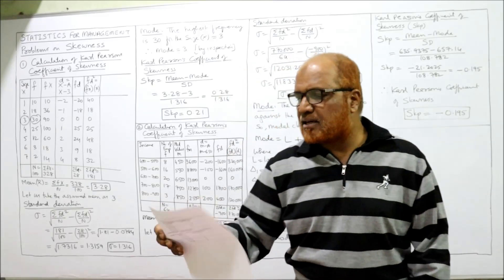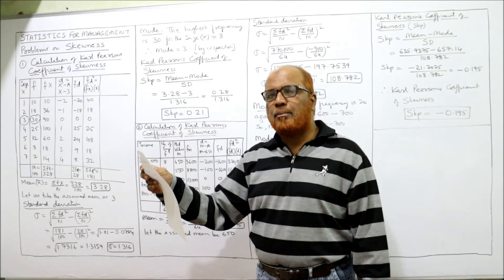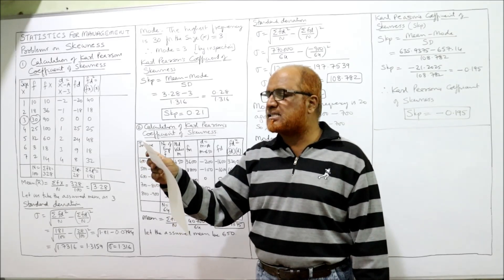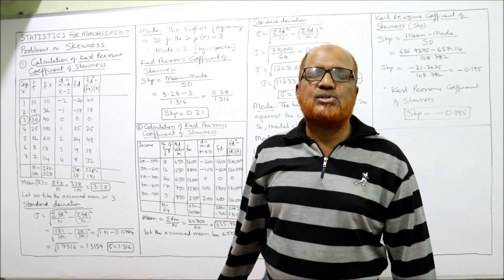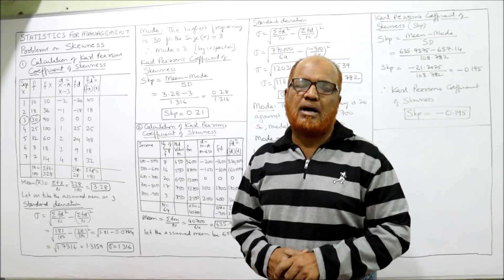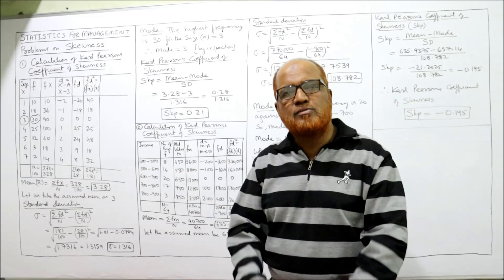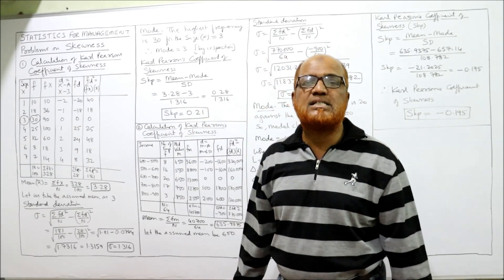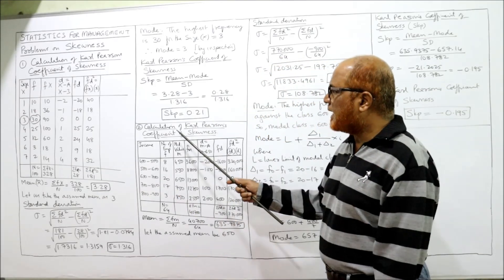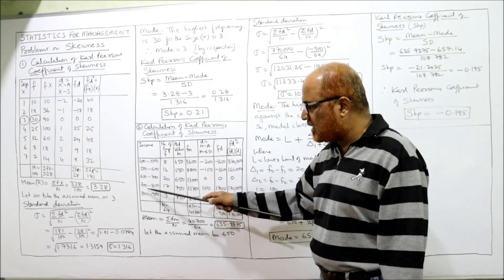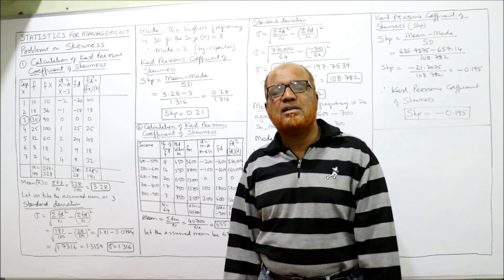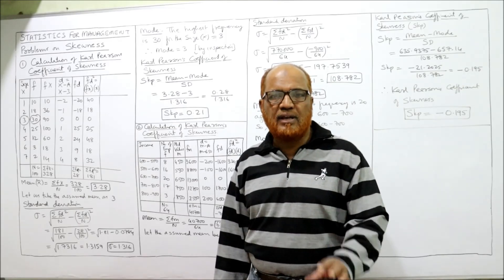Second problem: Calculate Karl Pearson's coefficient of skewness from the data given below. Income: 400–500, 500–600, 600–700, 700–800, 800–900. Number of employees: 8, 16, 20, 17, 3. This is a continuous series because class intervals are given. The formula for skewness is the same: (Mean − Mode) / Standard Deviation. We still need mean, mode, and standard deviation.